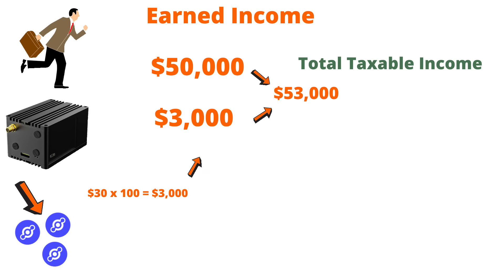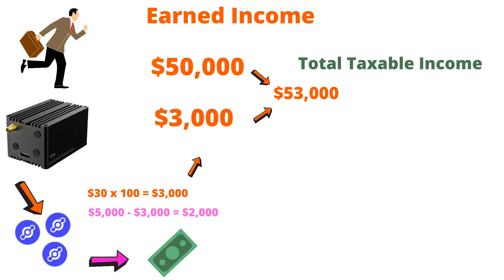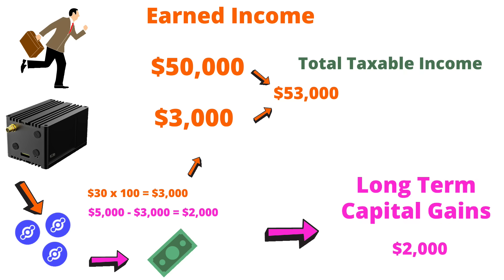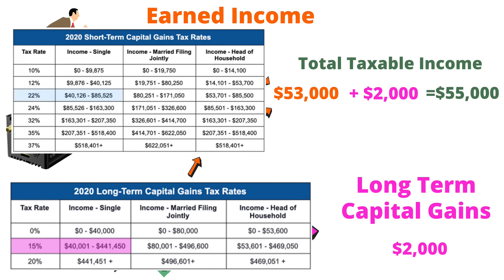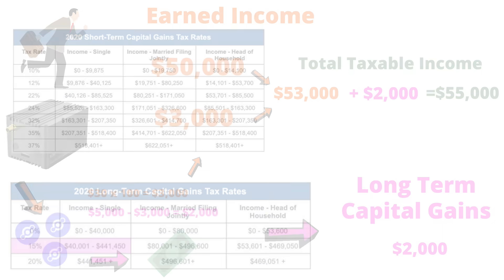Example 2: if instead Jason had decided to hold his HNT for a full year and sold at the same amounts as in the previous example, his HNT would be taxed at the rate of 15%. Because long-term capital gains tax rates are lower than short-term, it is considered a tax advantage to hold your HNT for over a year before selling.